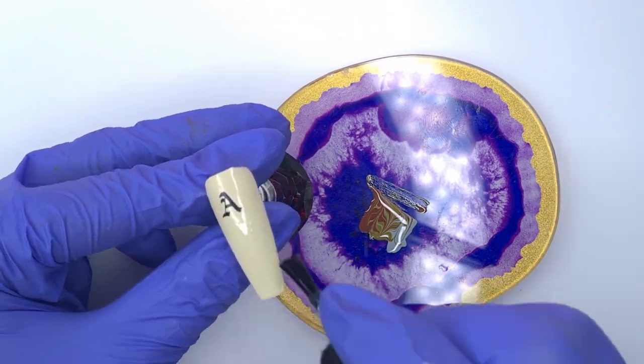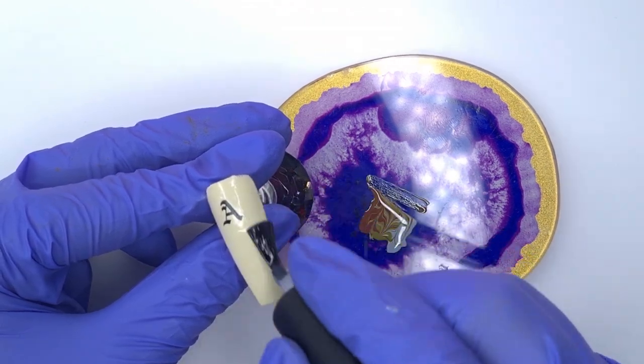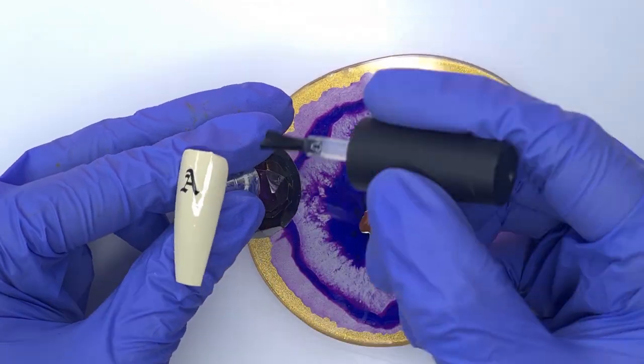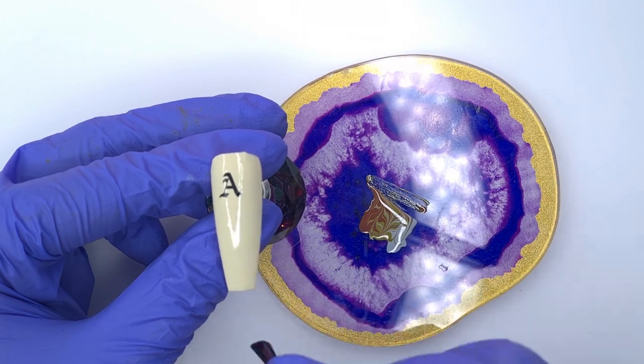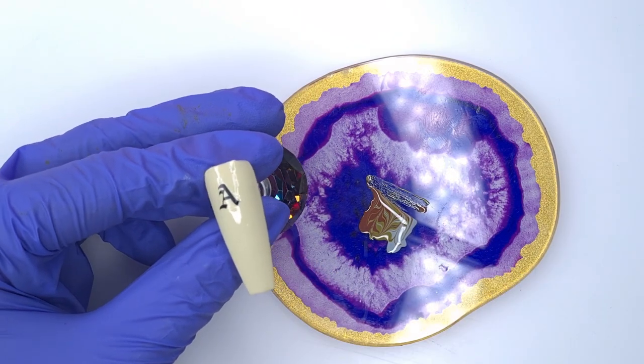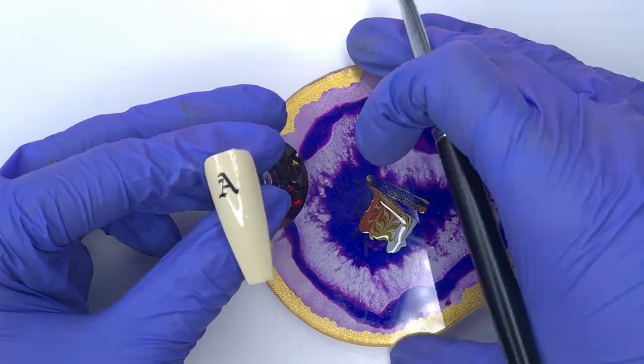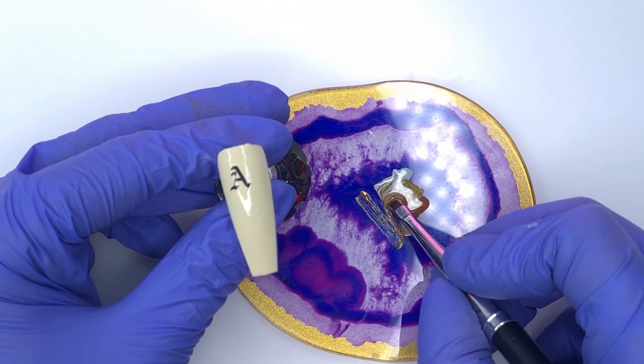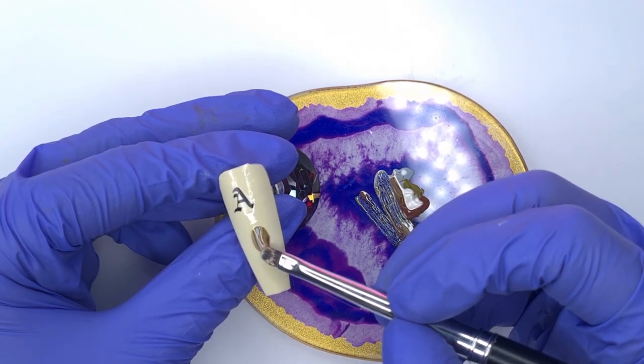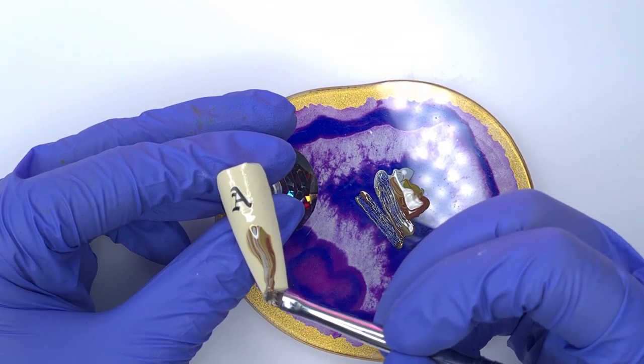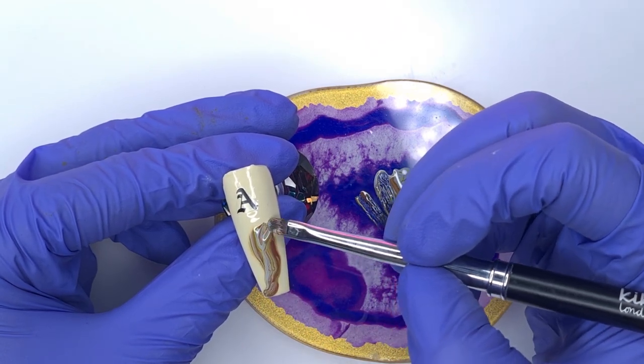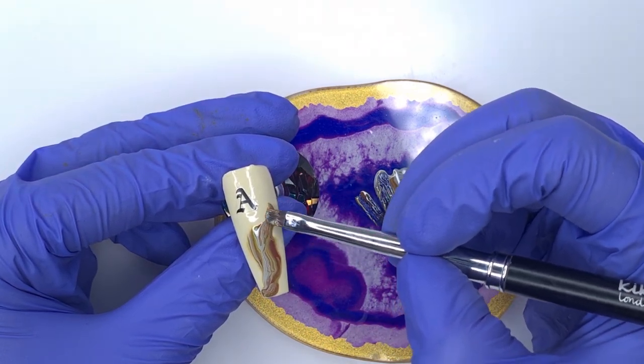So I'm going to repeat that step on all of the nails and after I've applied that marble I'm popping each nail straight into cure for 60 seconds. If you want your marble to bloom more or the colors to merge and marble together a little bit more then rather than popping it straight into cure just leave it for a few seconds for the base coat to work its magic.